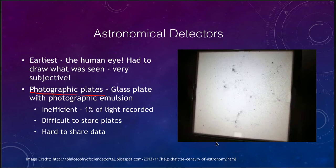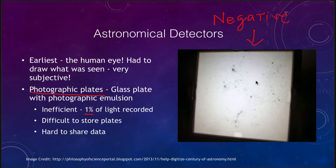However, photographic plates were inefficient — you only recorded about one percent of the light striking the plate. Here we see an example of a photographic plate. Note that it is a negative; most astronomical detectors give you a negative image, primarily because it's easier to see a faint object that's dark on a bright surface. A faint black dot on a white surface is much easier to see than a faint white dot on a black surface. Because only one percent of the light was recorded, you were not able to see as faint as you otherwise would with a more efficient detector.